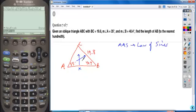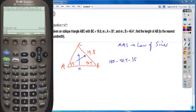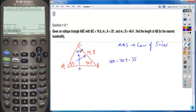We can use triangle sum here. Take 180, subtract 40.4 and 35 from that to get the angle left over for angle C using triangle sum. So we know that angle C has to be 104.6 degrees.